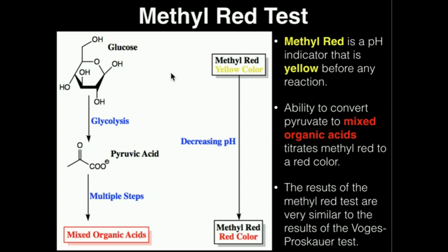In a methyl red test, what we're testing is the ability of the bacteria to convert pyruvic acid after glycolysis to mixed organic acids — which we won't actually name those — but we're just testing its ability to form mixed organic acids.